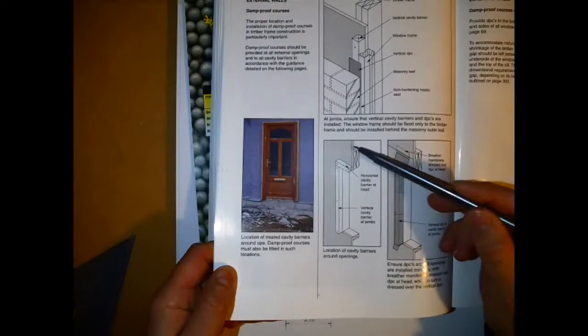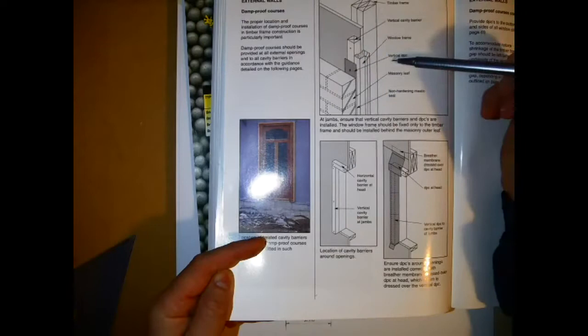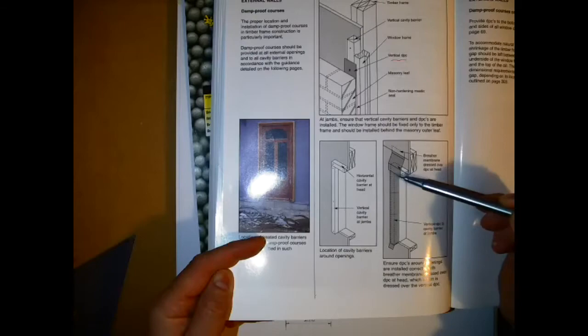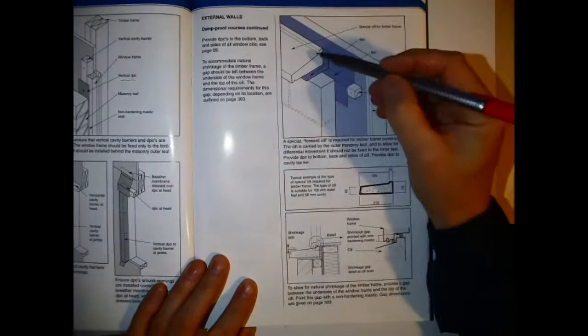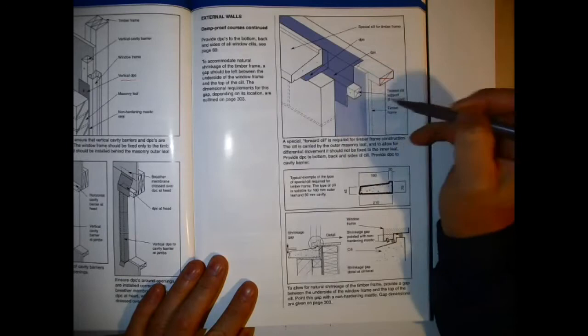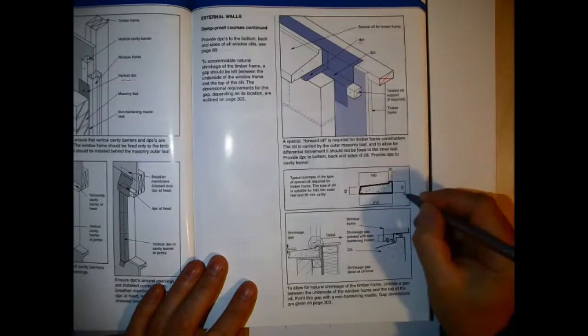The same story with the door: you've got a cavity barrier which is really a piece of two by two, 50 by 50 millimeters, which just goes right around. You can see here the frame in the correct position with the vertical DPC and the DPC at the top, the step DPC which you would have in your concrete built as well. That's just not right in the workbook or actually in the textbook either.